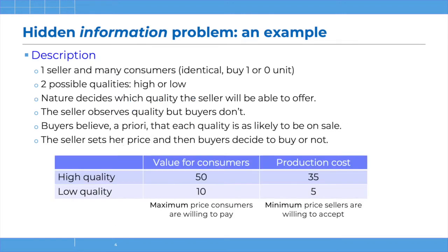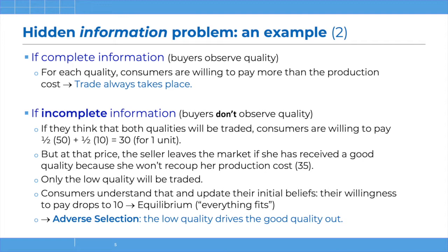The problem is that producers of high quality goods need at least 35 to cover their costs. But consumers are only willing to pay the average of 50 and 10, which is 30. So a high quality seller wouldn't be willing to come to the market, because they won't receive a price large enough to cover production costs. This is where the market starts to unravel. Consumers realize that if both qualities were on the market they'd pay only 30, but this price isn't enough to convince high quality sellers to participate. So they revise their beliefs and rightly conclude that only low quality goods will be offered on the market.